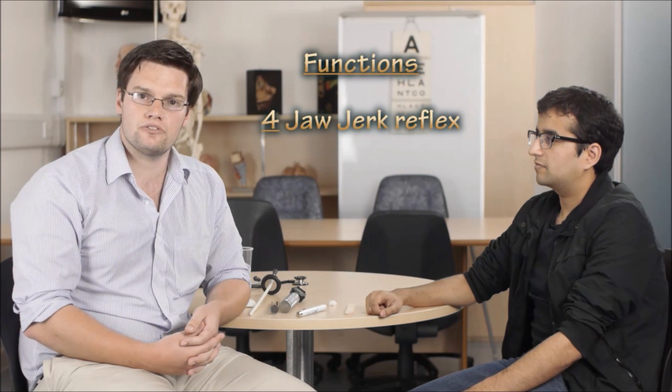The trigeminal nerve has three divisions: the ophthalmic, the maxillary and the mandibular. When testing the trigeminal nerve, you first simply observe the patient's face and look for any muscle wasting of the temporalis or the masseter muscles.